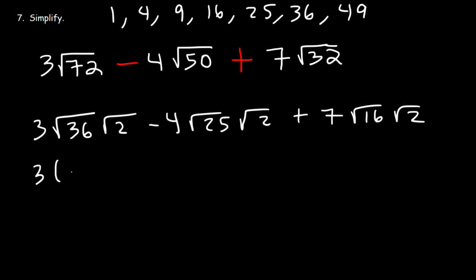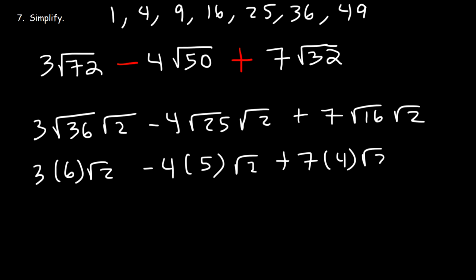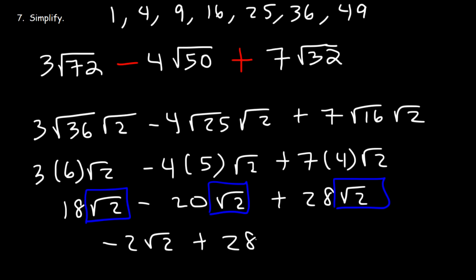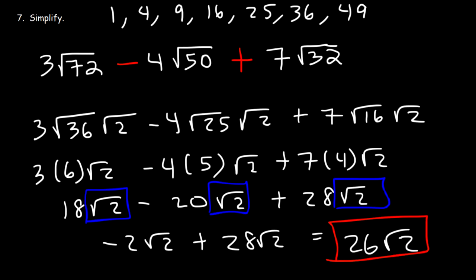The square root of 36 is 6, the square root of 25 is 5, and the square root of 16 is 4. 3 times 6 is 18, 5 times 4 is 20, and 7 times 4 is 28. Notice that each term contains a square root of 2, so because they are like terms, we can combine the coefficients. 18 minus 20 is negative 2, and negative 2 plus 28 is 26. So the final answer is 26 root 2.